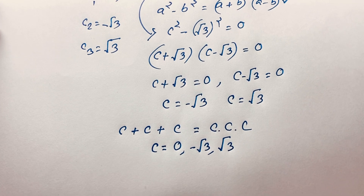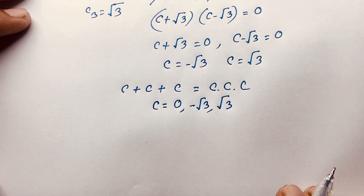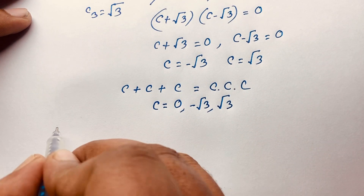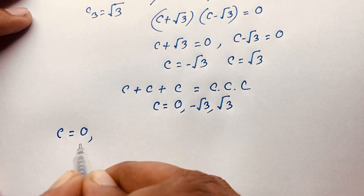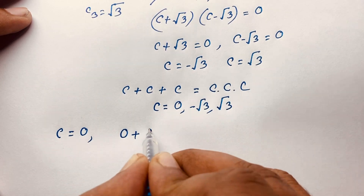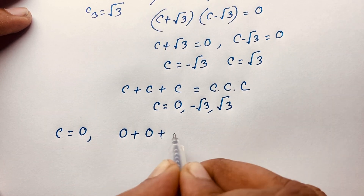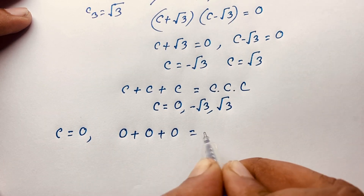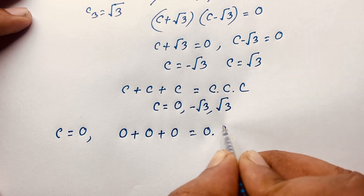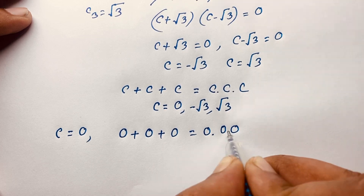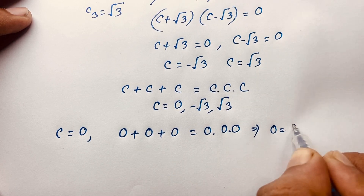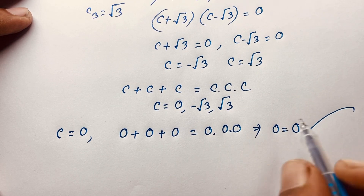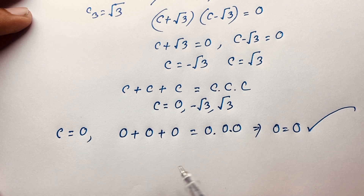Now let's check out. If I take C is equal to 0, this time you can say 0 plus 0 plus 0 and 0 times 0 times 0, it will be 0 is equal to 0. So I consider C is equal to 0 — it is our right answer.